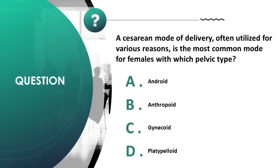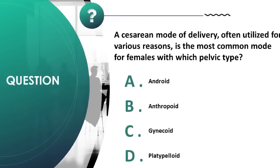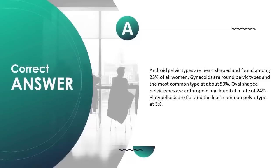A cesarean mode of delivery is most common for females with which pelvic type? A) android, B) anthropoid, C) gynecoid, D) platypelloid. Correct answer is A. Android pelvic types are heart-shaped and found among 23% of all women.